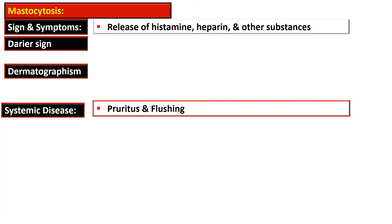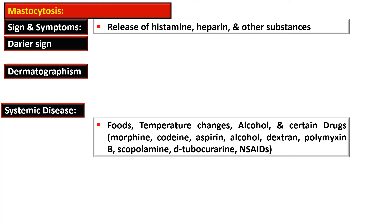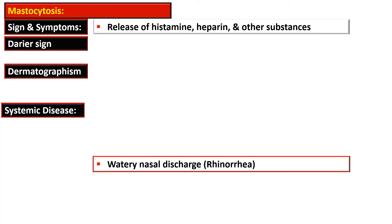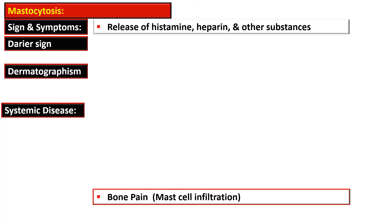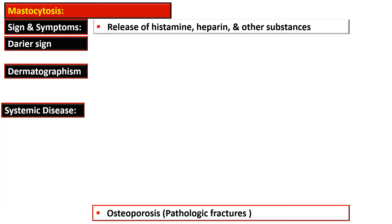The systemic disease has many signs and symptoms. Pruritus and flushing may be due to food, temperature changes, alcohol, and certain drugs such as morphine, codeine, aspirin, dextran, polymyxin B, scopolamine, d-tubocurarine, and non-steroidal anti-inflammatory drugs. There can be watery nasal discharge or gastrointestinal or nasal bleeding due to the anticoagulant effect of heparin. Bone pain may result from mast cell infiltration or osteoporosis due to excessive histamine release into the marrow.